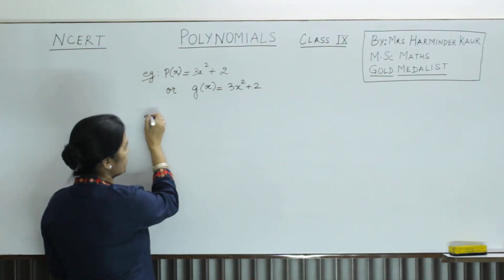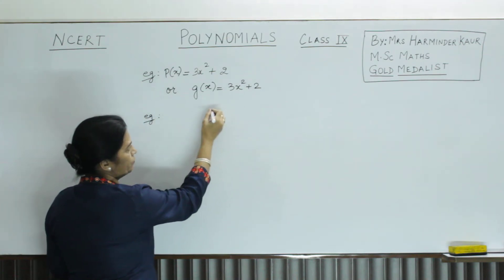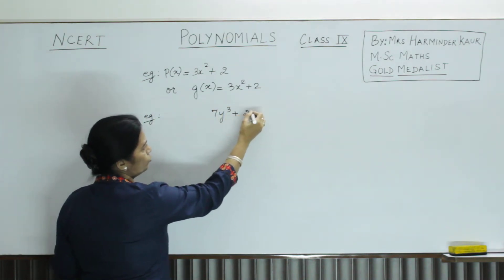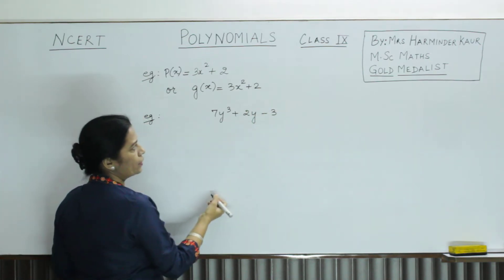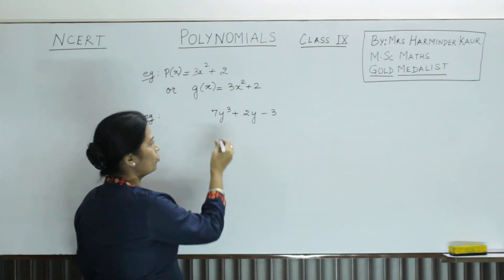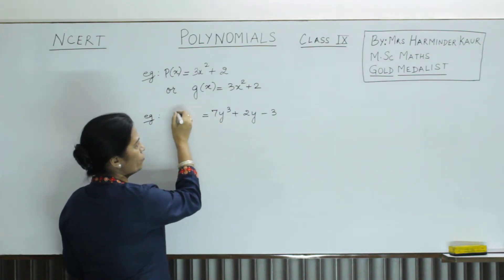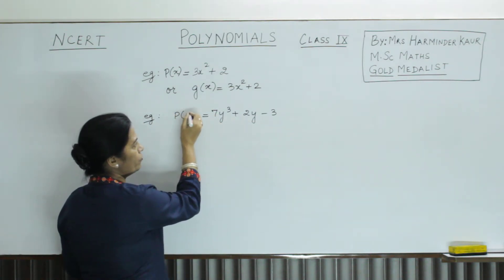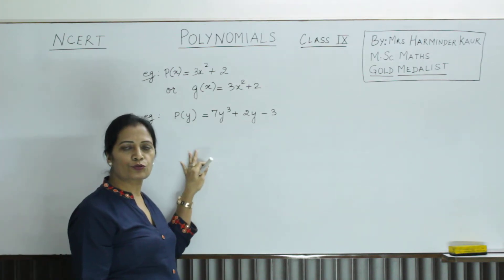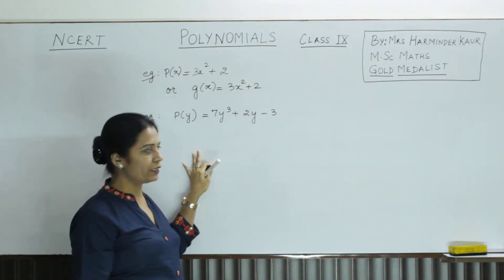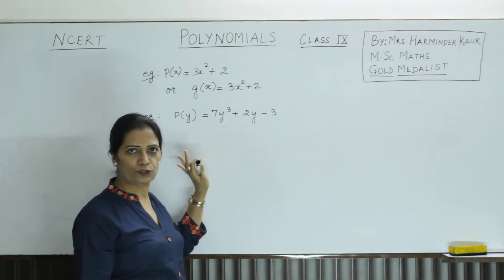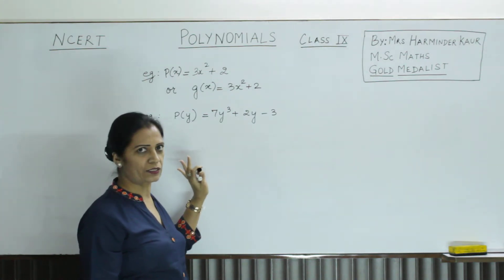If we take some other variable, suppose it is 7y cubed plus 2y minus 3, then what is the variable here? It is y. So we can say it is variable y, and we write P(y). You can call it polynomial in y, or write it as g(y) — you can represent it either way. Understood?